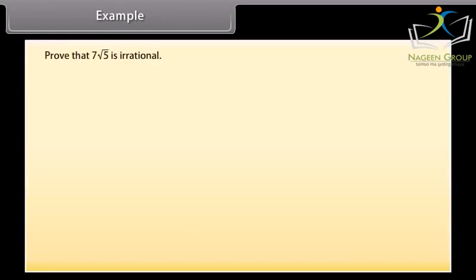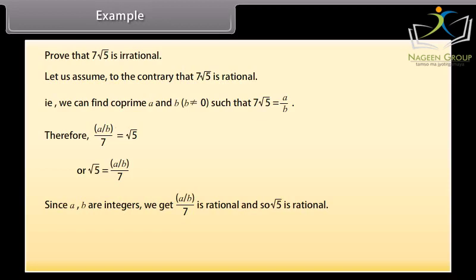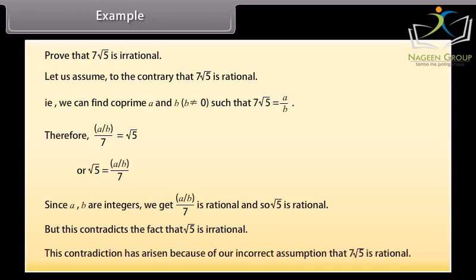Example: Prove that 7√5 is irrational. Assume to the contrary that 7√5 is rational — that is, we can find co-prime a and b, where b ≠ 0, such that 7√5 = a/b. Therefore a/(7b) = √5, or √5 = a/(7b). Since a and b are integers, a/(7b) is rational, and so √5 would be rational. But this contradicts the fact that √5 is irrational. This contradiction has arisen because of our incorrect assumption that 7√5 is rational.